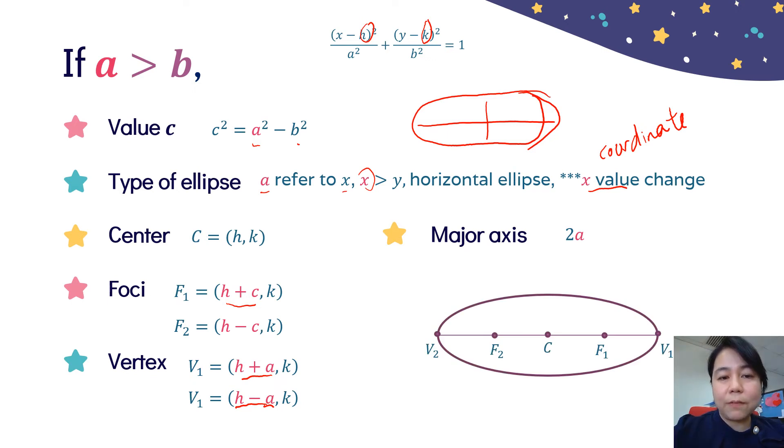This is the shape of the ellipse that we have, horizontal ellipse. We need to label all the important coordinates: the center, F₁, F₂, V₁, V₂.